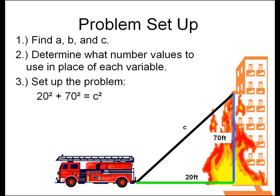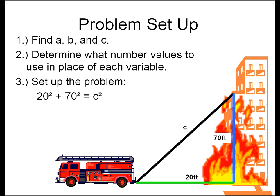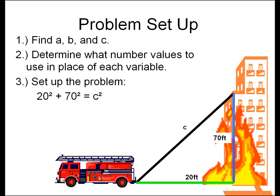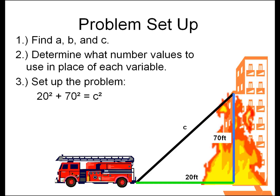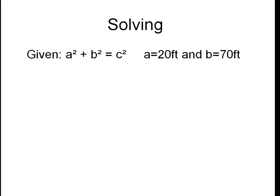Now we know that we are solving for C. 20 squared plus 70 squared equals C squared. Using the Pythagorean theorem, we are going to find the value of C. Solving our equation, given that A squared plus B squared equals C squared. A equals 20 feet and B equals 70 feet.